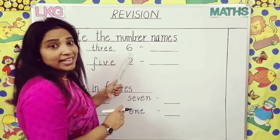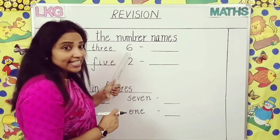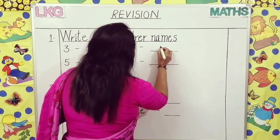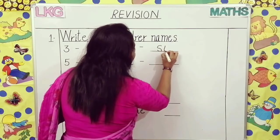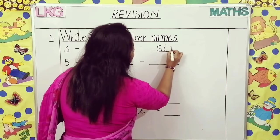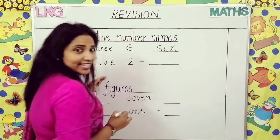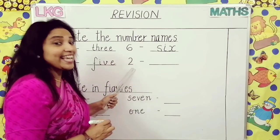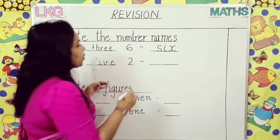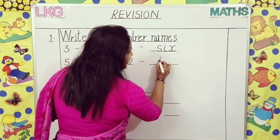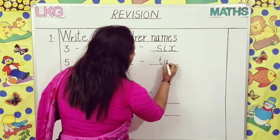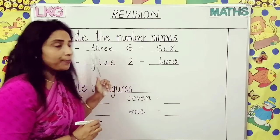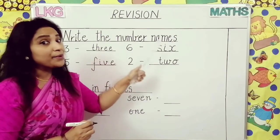Now come to the next number. Which number is this, children? Six. So what is the number name of six? S-I-X. Six. So the next number — which number is this, children? Two. The number name of two is T-W-O. Two. So this is our first topic: write the number names.